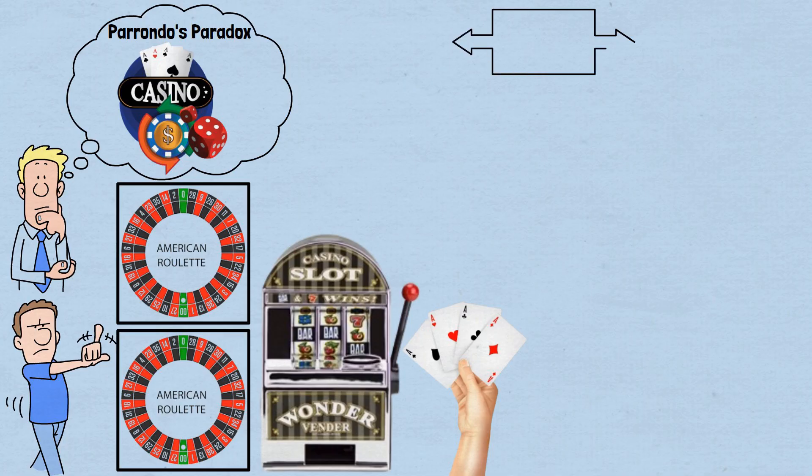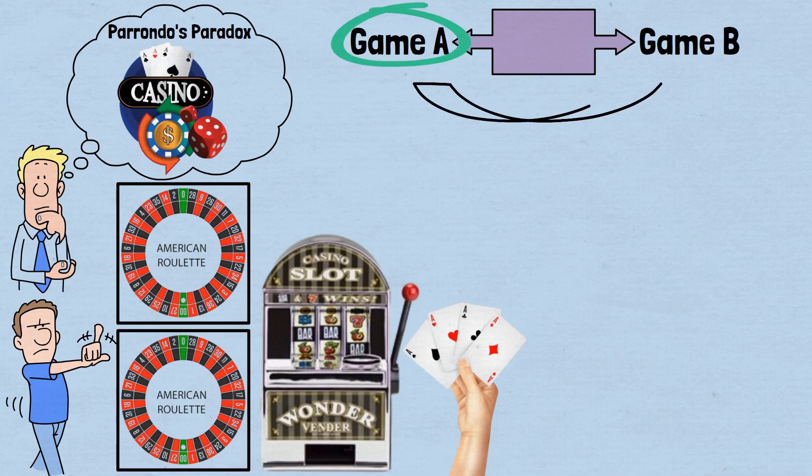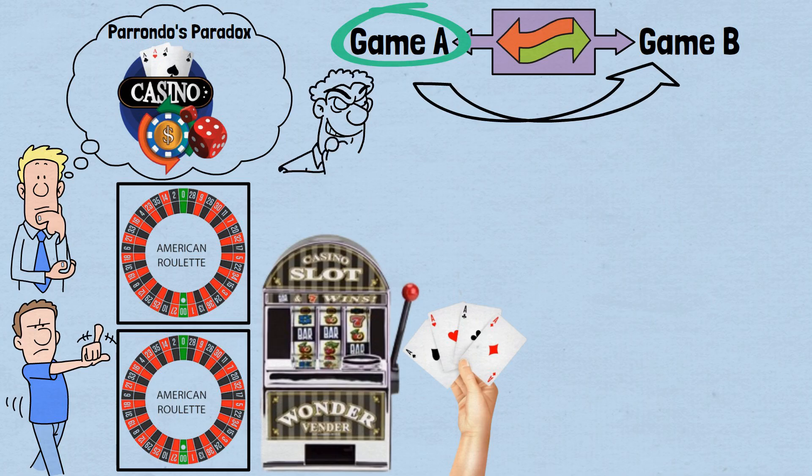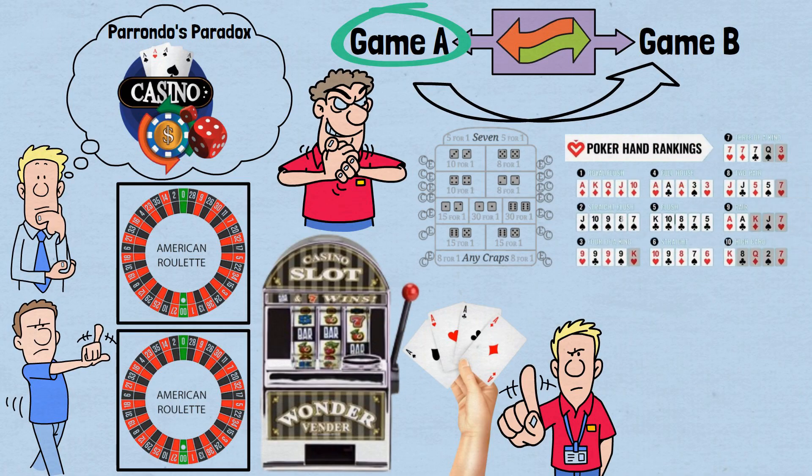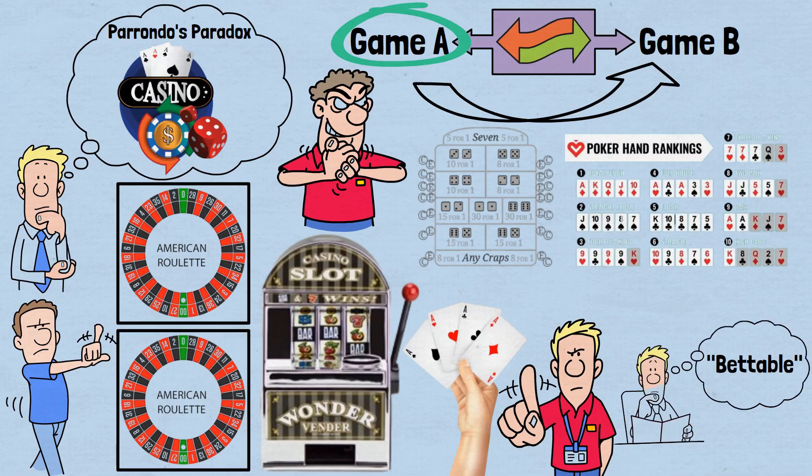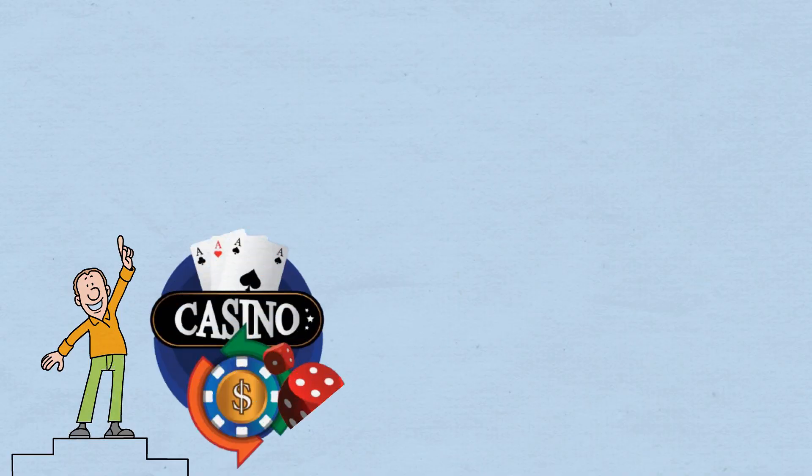Parrondo's Paradox requires that the two games interact—that your performance in one game affects your situation in the other game. In our examples, your money total from Game A determined which sub-game you played in Game B, and vice versa. Casinos deliberately eliminate such interactions. They ensure that the outcome of one game never influences your position in another game. A roulette result will never steer you toward an advantageous round of craps or poker. Each bettable event exists in its own mathematical bubble that pops as soon as that round ends. This independence requirement is one reason you rarely see new games introduced at casinos.